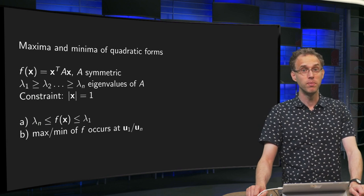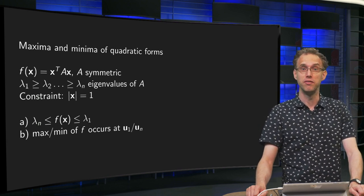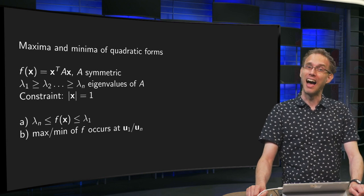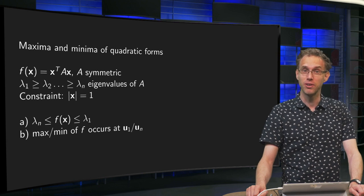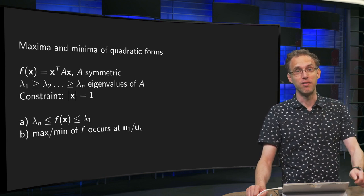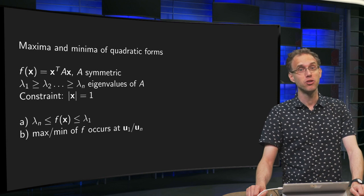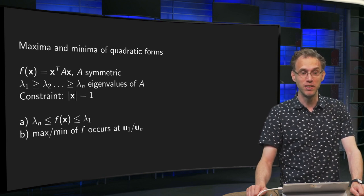Finding the optima of a multivariable function is usually very difficult, if not impossible. And even more so if you have a constraint on your input variable. If you have a quadratic form though, this turns out to be a lot easier, as you will learn in this video.